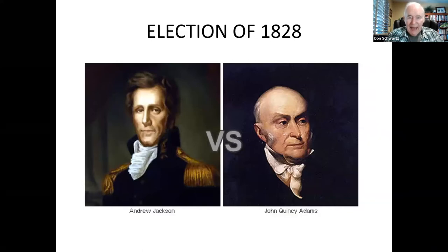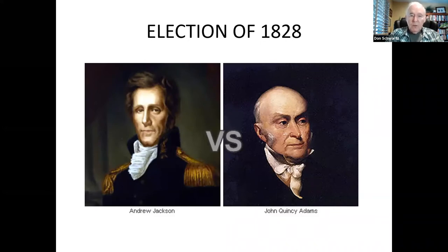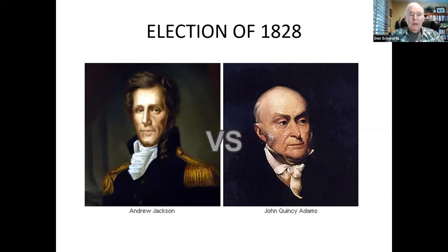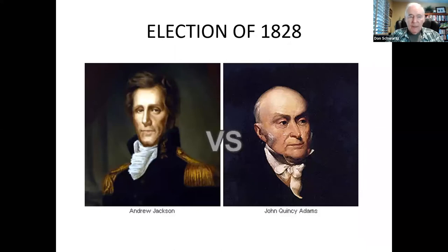Adams' supporters organized a new party called the National Republicans, and Jackson's supporters called themselves Democratic Republicans, or just Democrats. Today's Democratic Party really originated with the election of 1828. From the first presidential election in 1789 until 1828, every one of the seven presidents had been from either Virginia or Massachusetts. But by 1828, the balance of power was shifting westward, and Andrew Jackson of Tennessee capitalized on that trend.